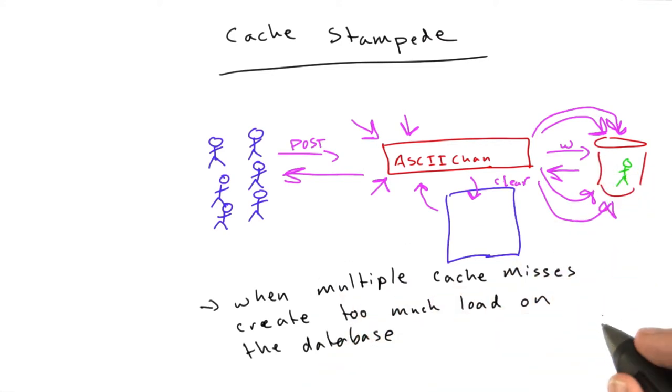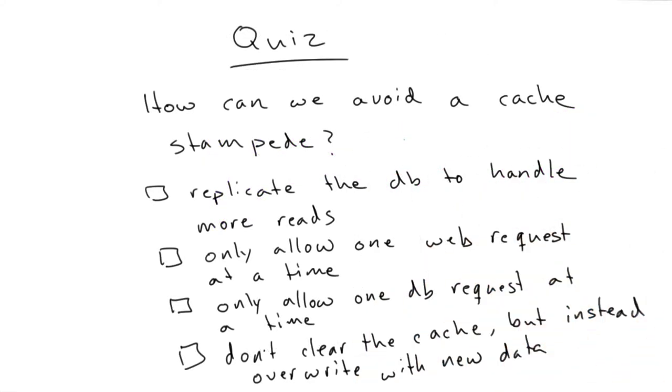Let's have a quick quiz and see if we can figure out the solution to this problem. Okay, how can we avoid a cache stampede? We replicate the database to handle more reads, only allow one web request at a time, or database query at a time, or don't clear the cache, but instead override it with new data.